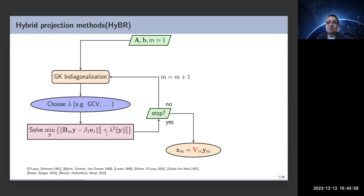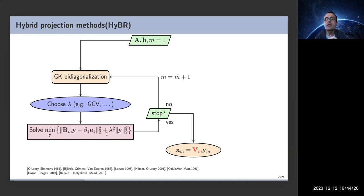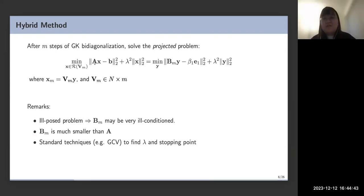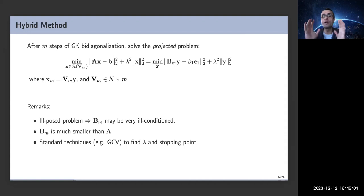What does the matrix A represent in practice? For image deblurring, A represents the blurring operator, generated from a point spread function that describes how each pixel is spread. Different types of blurring correspond to different point spread functions, and A encodes that blurring operation.